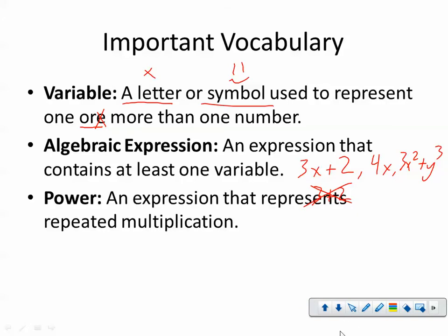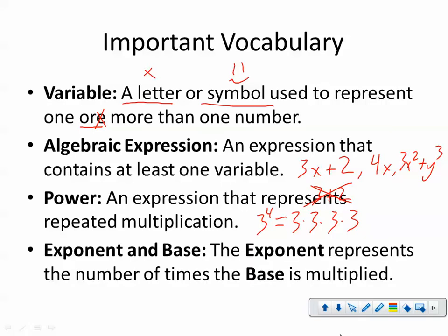We have a power. That is an expression that represents repeated multiplication. We have, like, 3 to the 4th power. That's our power, and it represents repeated multiplication, that I am multiplying that same number over and over again. And the last thing here is exponent and base. The exponent represents the number of times that the base is multiplied. So if we have something like 4 squared, the 4 is the base and the 2 is the exponent.